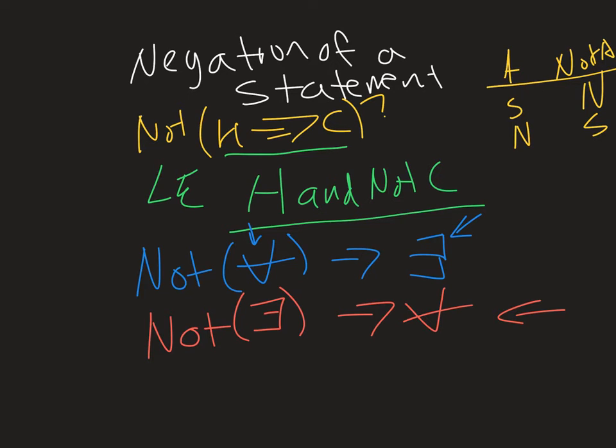So usually if you're talking about negating a generalization, you're going to start with there exists. And if you're trying to negate an existence statement, you're going to start with for all something. It's just kind of a way of getting yourself started.